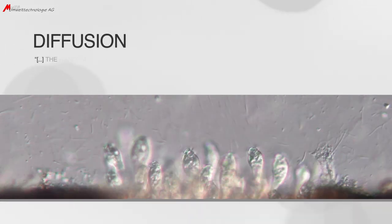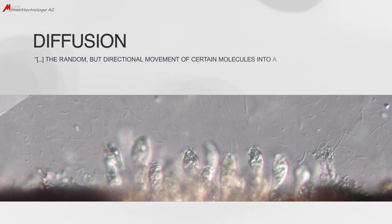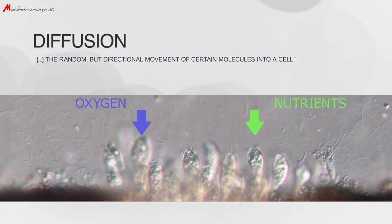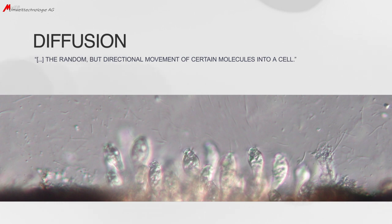As per the definition, diffusion shall mean the random but directional movement of certain molecules into a cell. The diffusion effect in biofilm processes has to be understood as the feed of substrate and oxygen molecules into the active biomass. Nutrients like phosphorus as well as oxygen diffuse from the surrounding water into the active biofilm and supply the microorganisms in the pores. In other words, diffusion is the supply of the microorganisms on the carrier with substrate and oxygen.